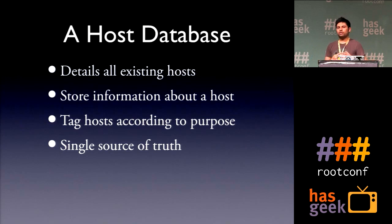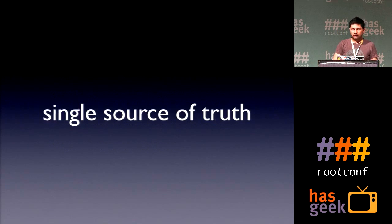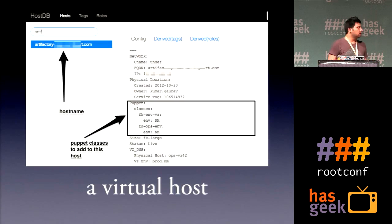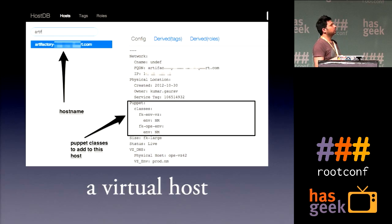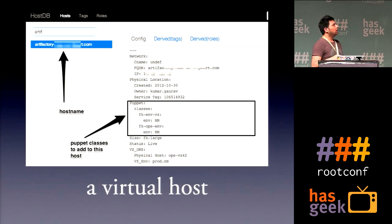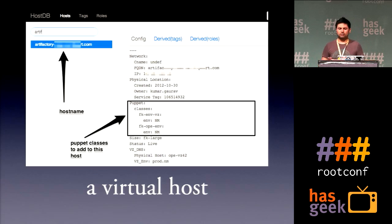It becomes a single source of truth for everyone. This is a screenshot of HostDB. Here you see the host name and the information about this host. This host is actually a virtual host — you can see it has classes like 'fkenvvc,' which is our pseudo name for a virtual machine. You know who created this host and when, what is the full name, what is the IP, and all this information is here.